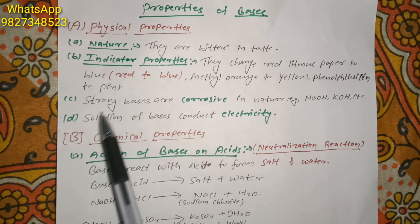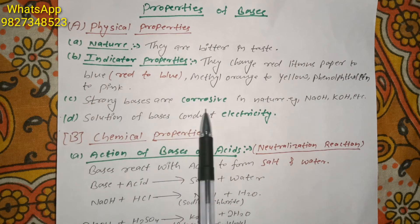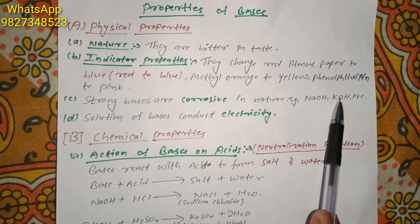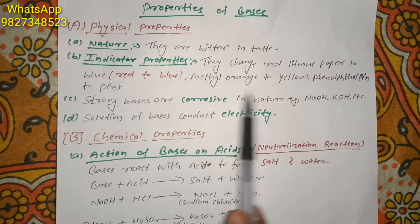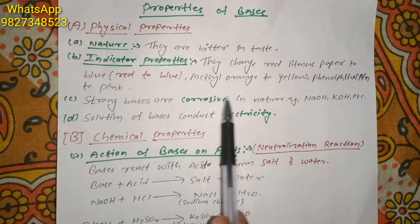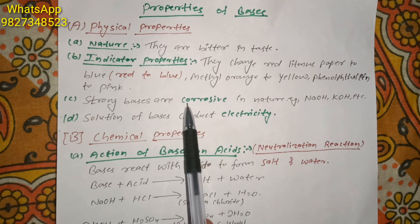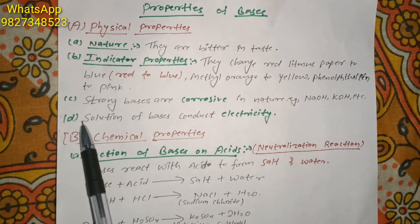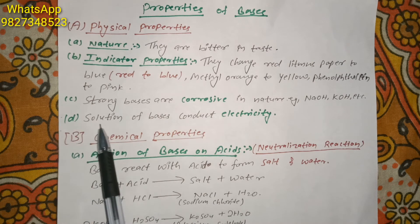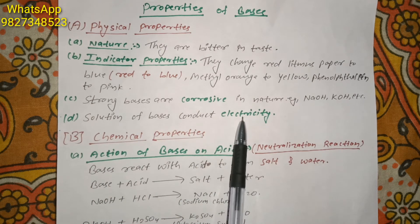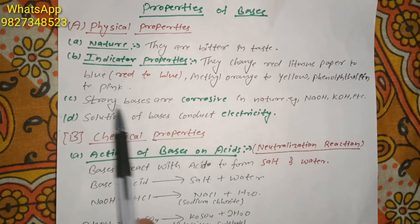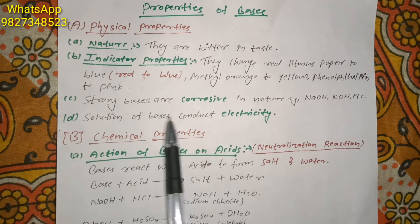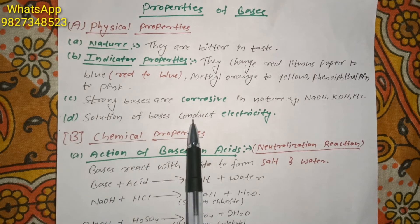The third property is that strong bases are corrosive in nature. For example, sodium hydroxide and potassium hydroxide are highly corrosive, and any material that comes in contact with them gets destroyed. The fourth property is that solutions of bases conduct electricity, and this conduction is due to the ions formed when they ionize.